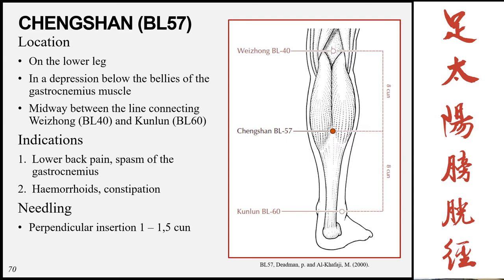The next point is Chengshan, Bladder 57, located on the lower leg in the depression below the bellies of the gastrocnemius muscles — at the tip of the upside-down triangle they form. It is approximately midway between Bladder 40 and Bladder 60 in line with the lateral malleolus. Indications include lower back pain, spasm of the gastrocnemius, hemorrhoids, and constipation. Insertion is perpendicular 1 to 1.5 cun.